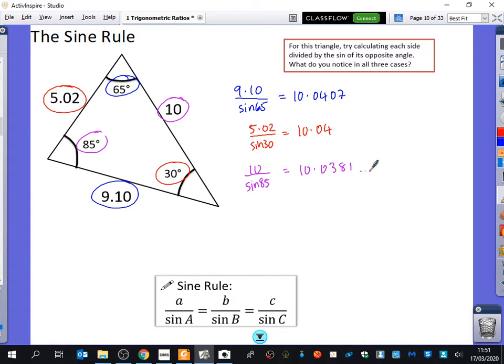So, what do you notice about those answers? They're similar, but they're not exactly the same. But they're meant to be exactly the same, right? That's the point of the sine rule. The sine rule down here says, when you do the side and you divide it by the sine of that angle, they should all be exactly the same as each other.